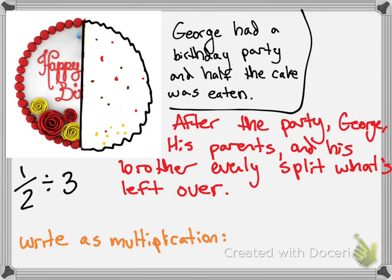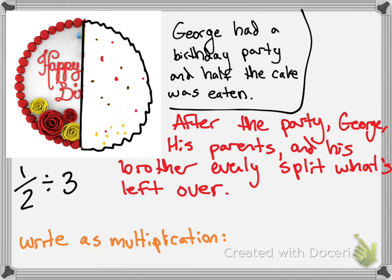Every single one of you decided to write it as one-half times three. But is one-half times three the same as one-half divided by three? No, those can't possibly be the same thing. Think about it — if I had six divided by three, is that the same as six times three? No. So I can't just keep everything the same; I have to do something different.